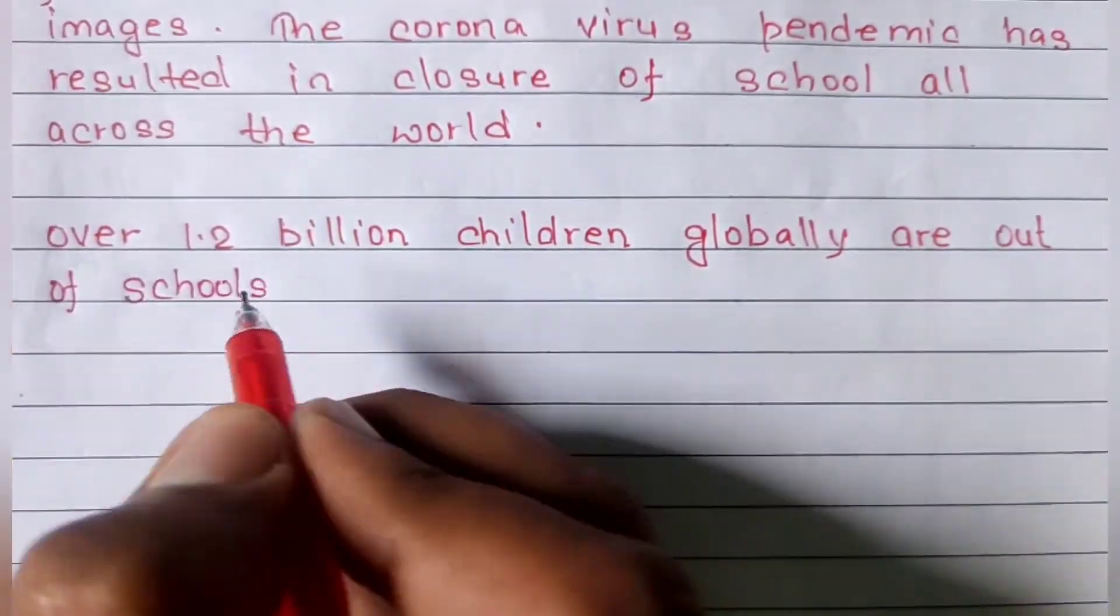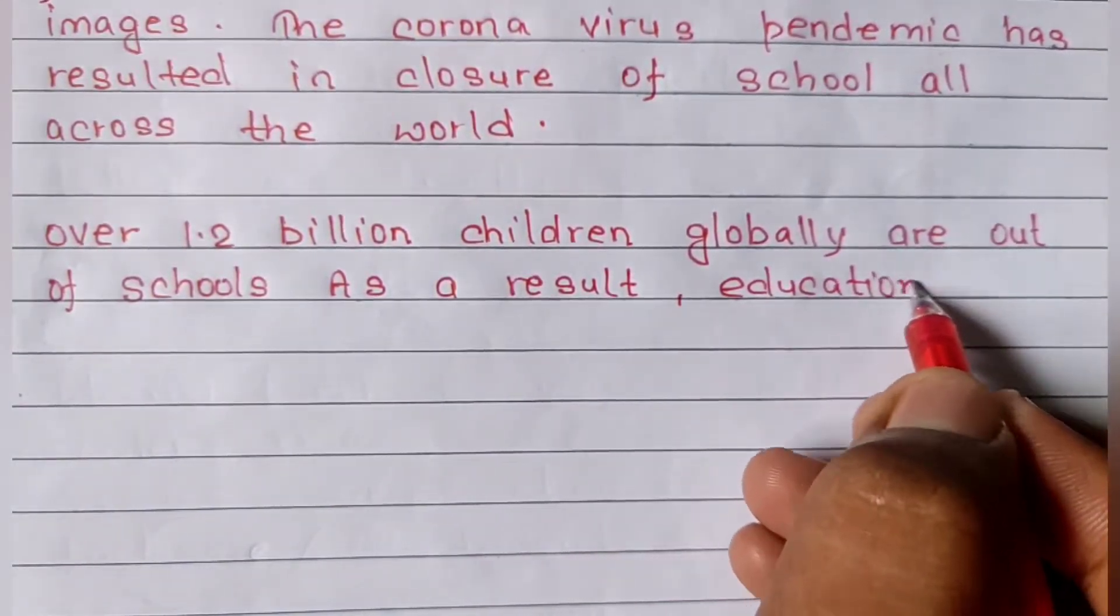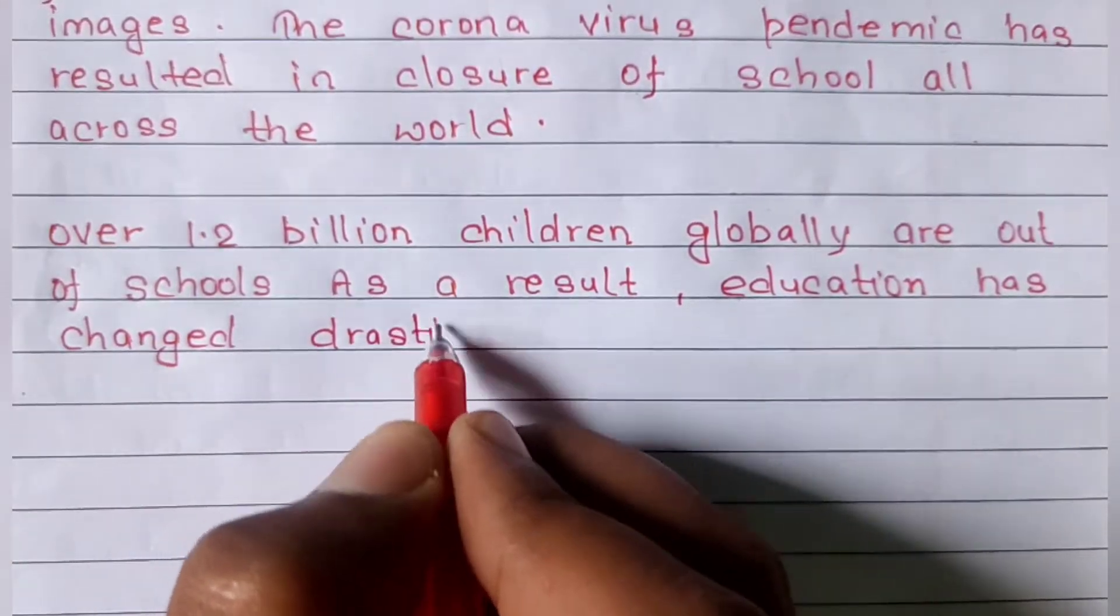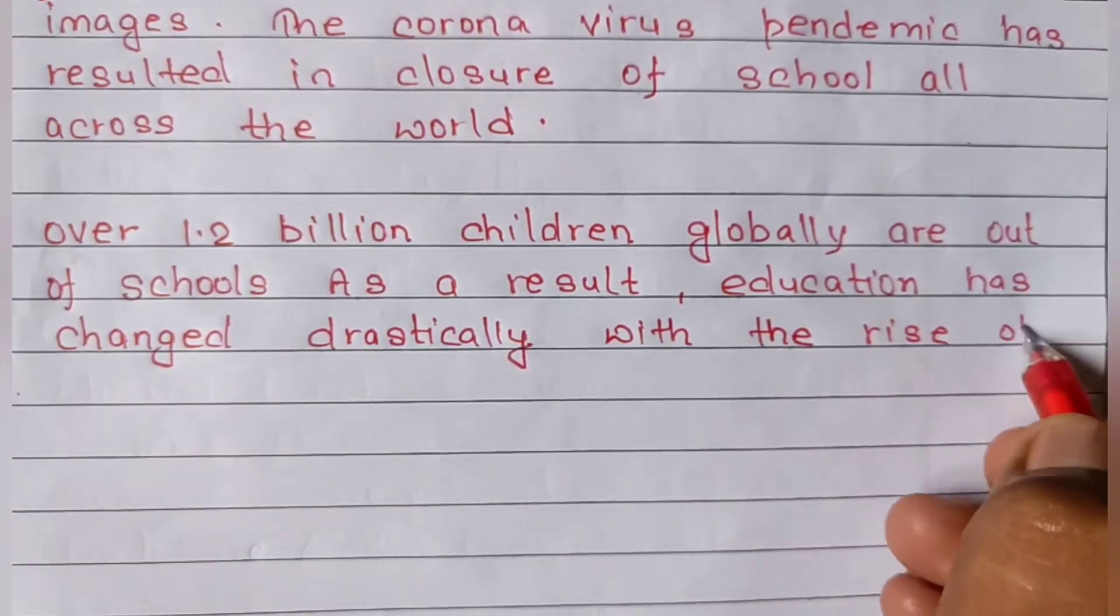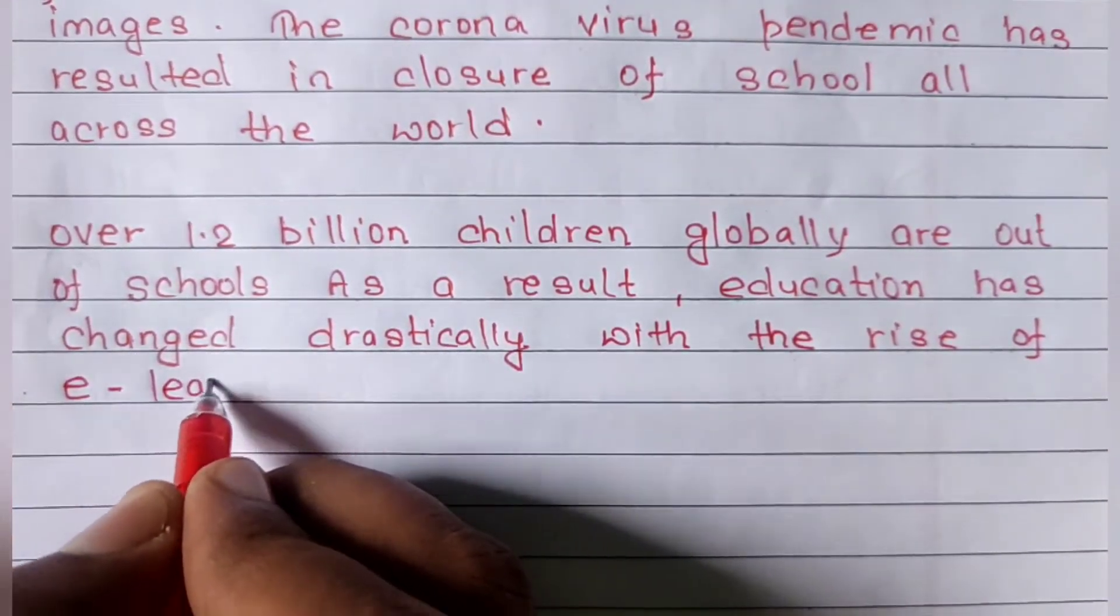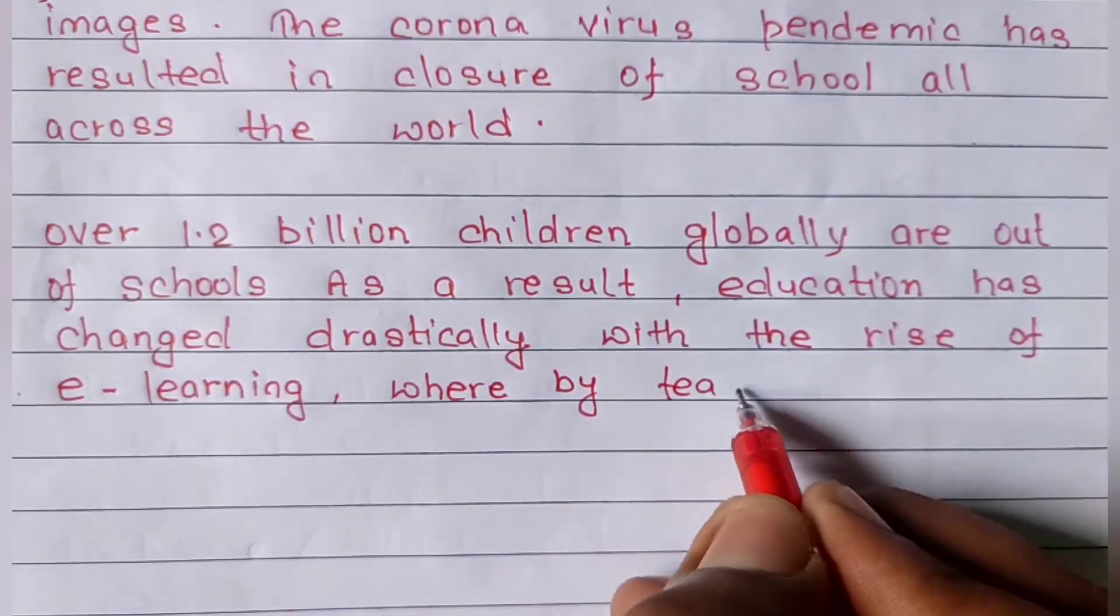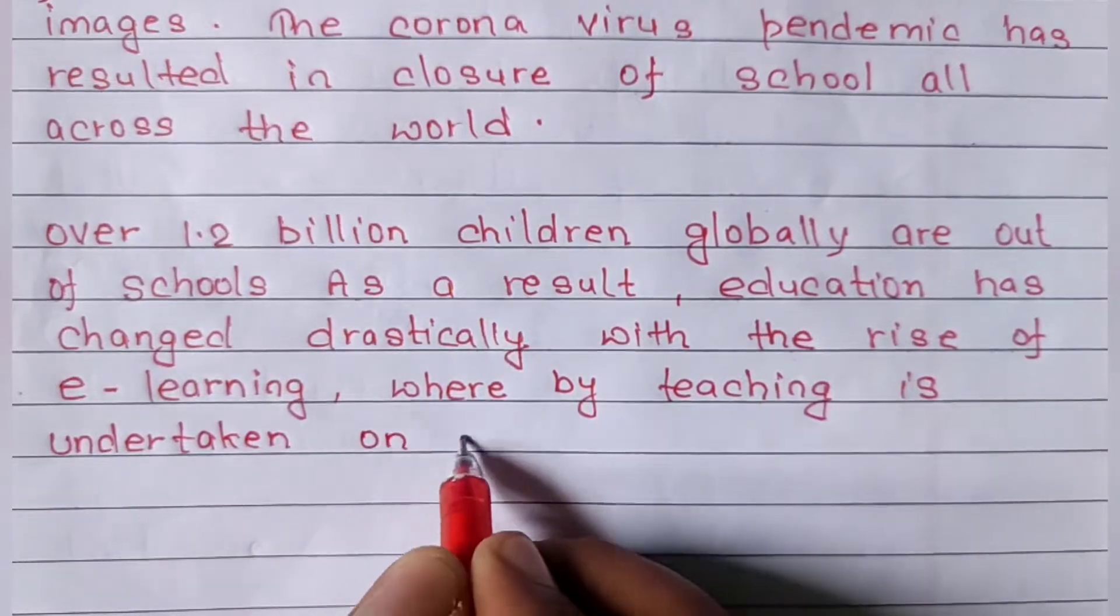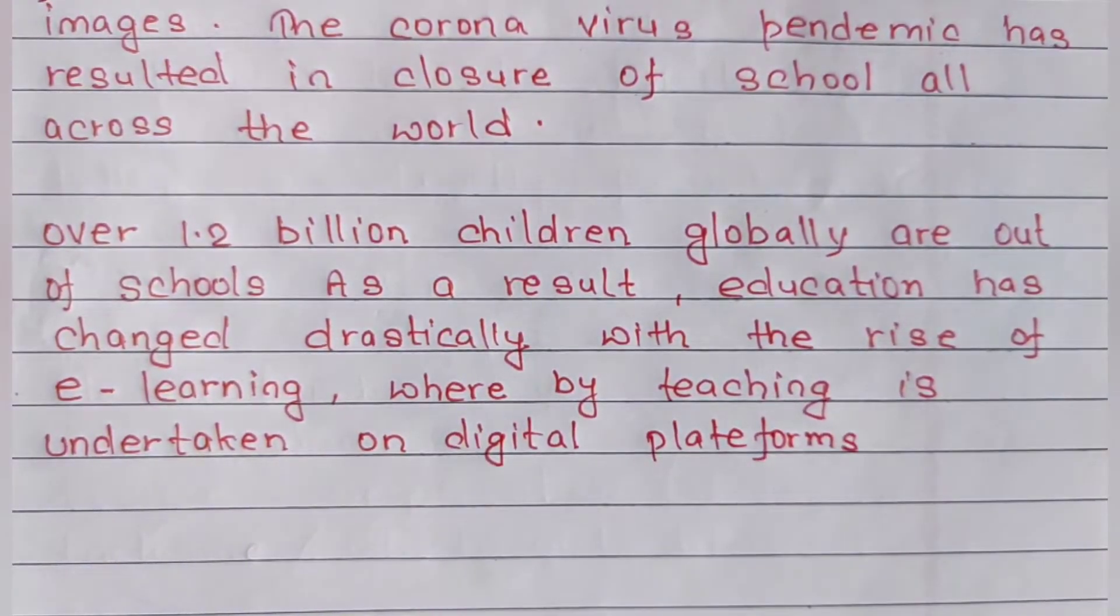Over 1.2 billion children globally are out of schools. As a result, education has changed drastically with the rise of e-learning, whereby teaching is undertaken on digital platforms.